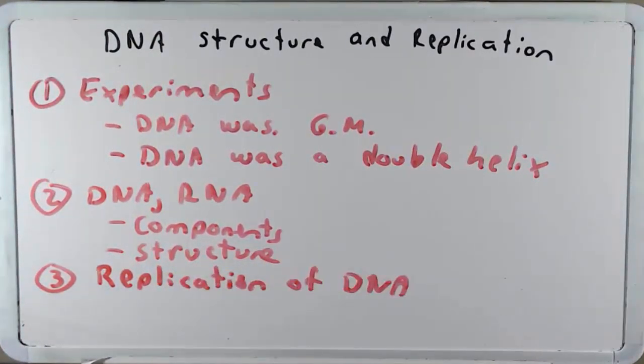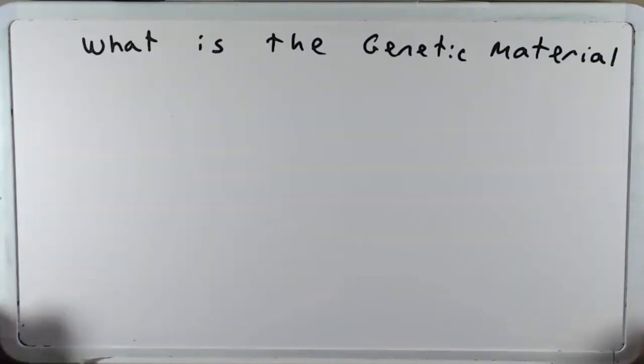So let's go ahead and get started with this first part here, some of these early experiments. Now sometimes we take for granted what the genetic material is. We now know that it is DNA but it was not always known that of course.